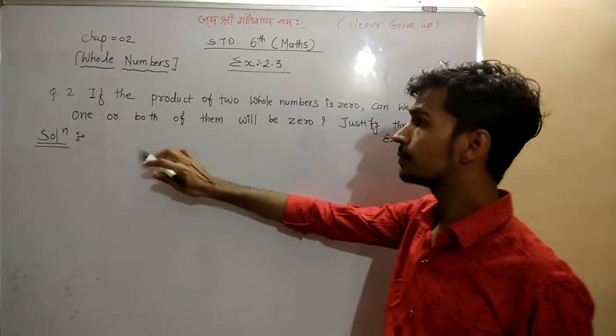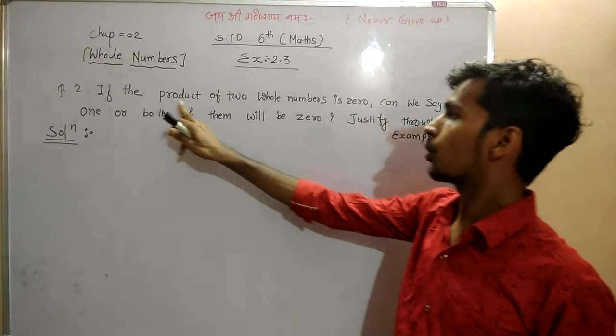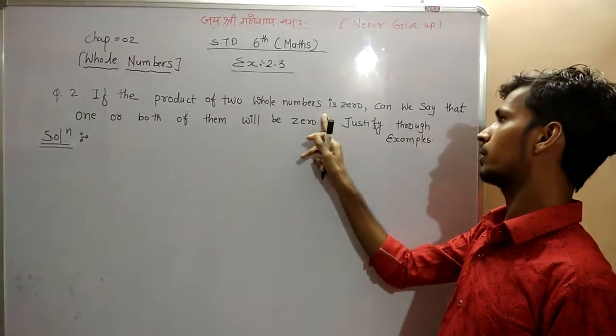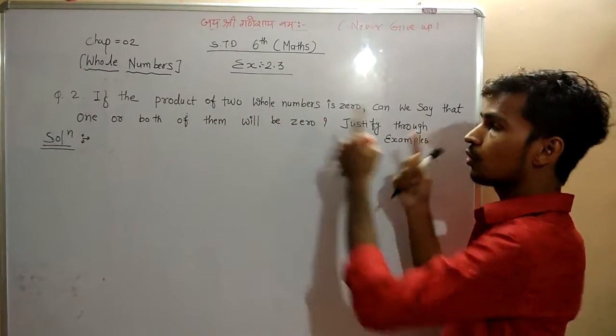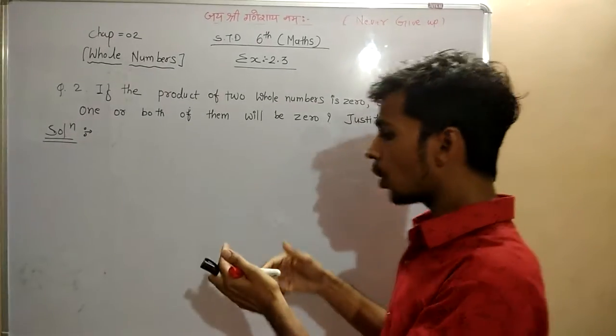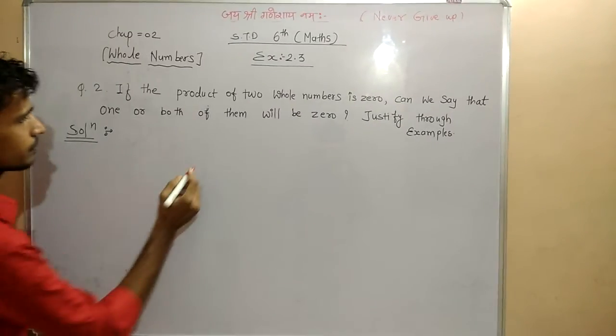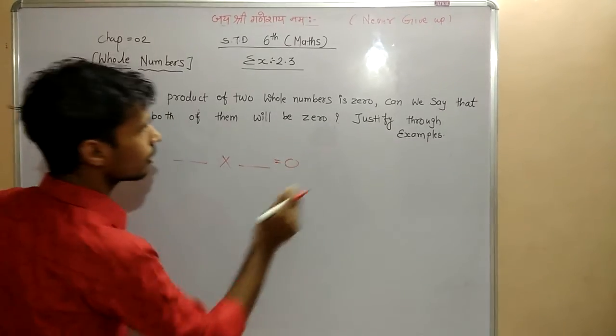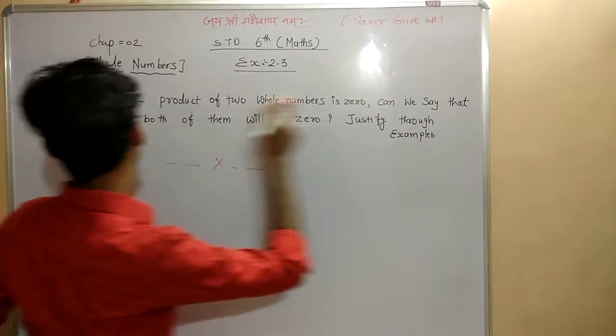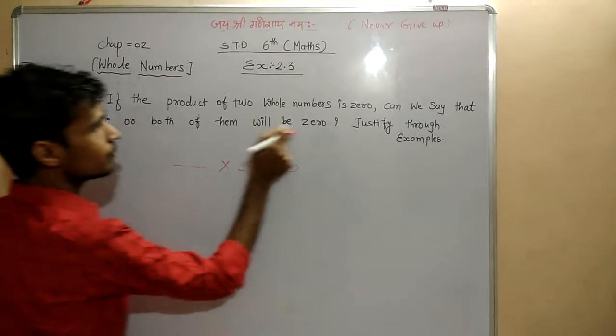The sum is: if the product of two whole numbers is zero, can we say that one or both of them will be zero?